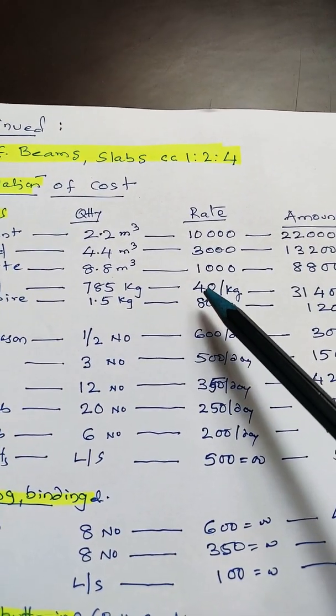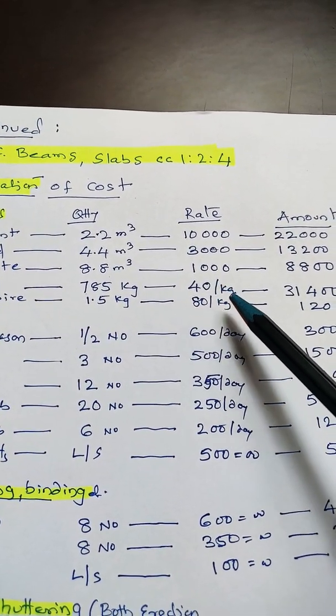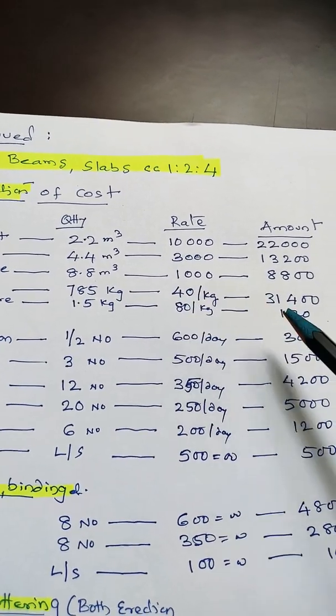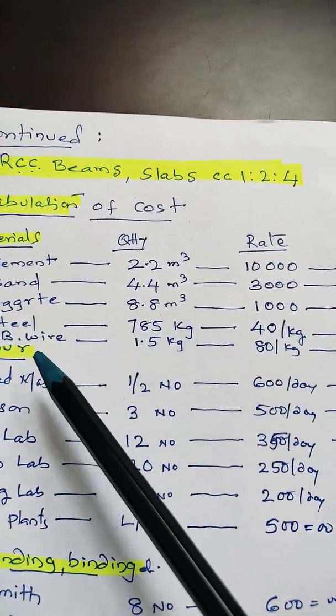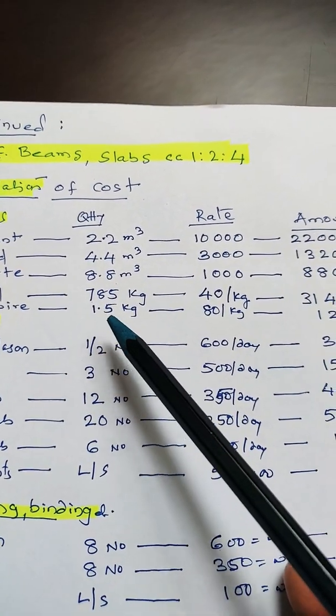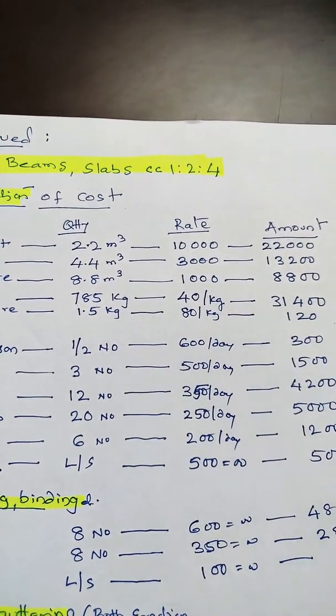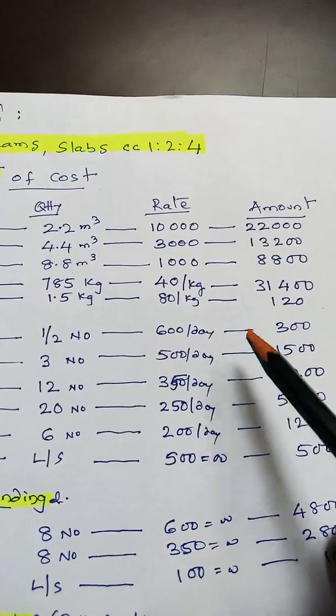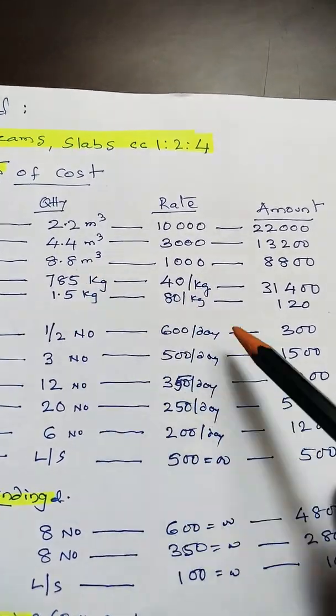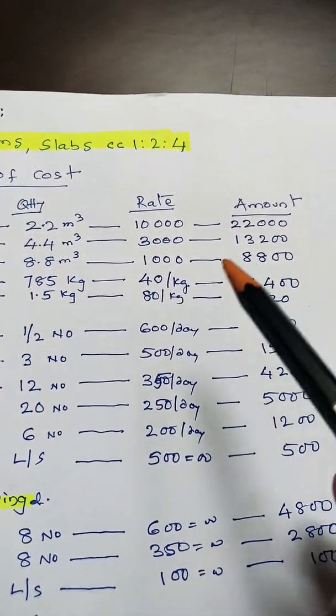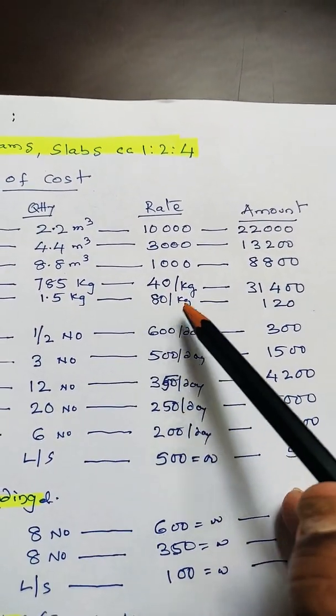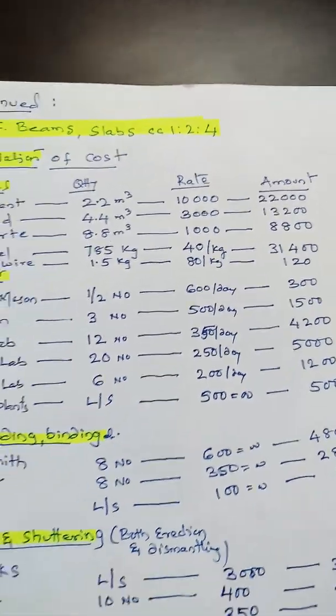Binding wire: consider roughly 1.5 kg per 10 meter cube of concrete. Remember this - there is no calculation for binding wire, just 1.5 kg per 10 m³ at around 80 rupees per kg = 120 rupees.